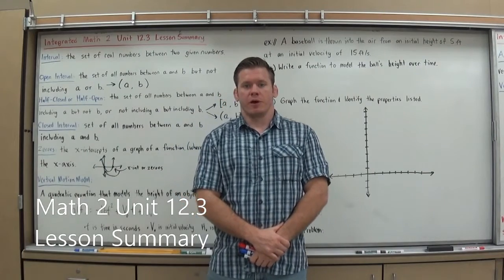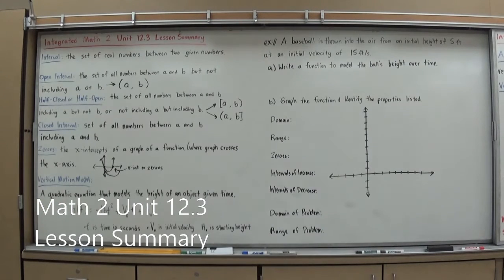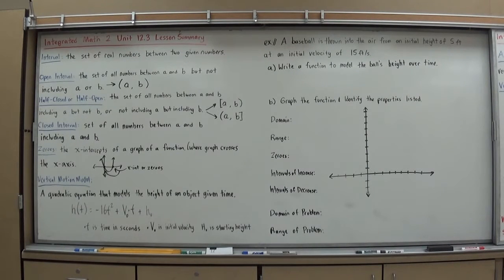Hi, I'm Mr. Richman, this is your Integrated Math 2, Unit 12.3 Lesson Summary. In 12.3, we're going to start to look at the graphs of quadratic functions when they're in standard form. Talk about how we can take vertical motion in the real world and turn it into a quadratic function. And then talk about how to identify the domain and range of functions, how to use proper notation for that, which will be interval notation, and we'll go from there.